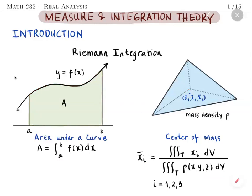We also use the Riemann integral in other examples: one could calculate the position of a moving projectile by integrating the acceleration twice; in population dynamics, one could determine population density by integrating the population growth rate; and in economics, one could compute revenue or total cost by integrating the marginal cost or marginal revenue.